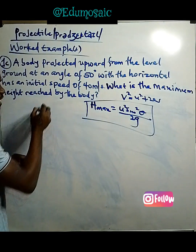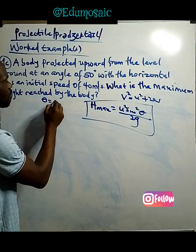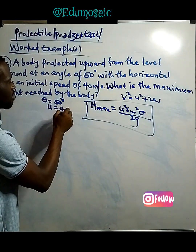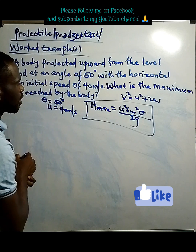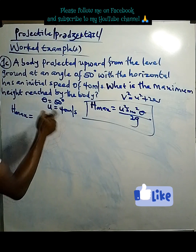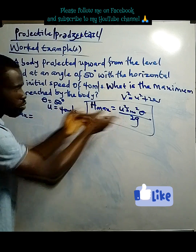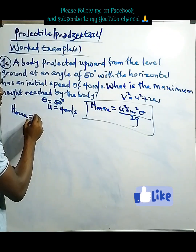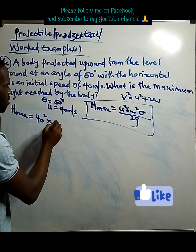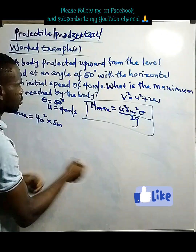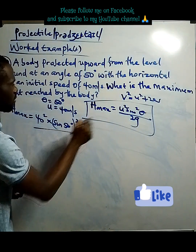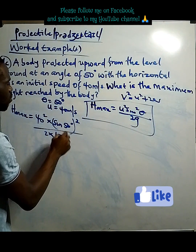Our angle is 50 degrees to the horizontal and the initial speed of projection is 40 meters per second. So the max height H_max is: 40² × sin²(50°) divided by 2 times gravity, where gravity is 10 meters per second squared. That gives us 1,600 × sin²(50°) divided by 20.